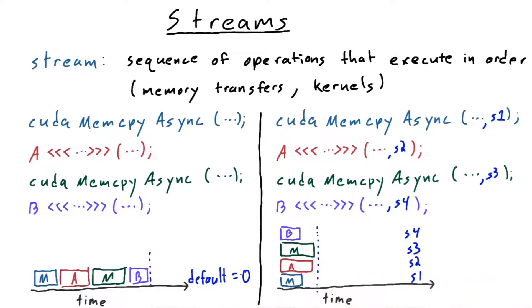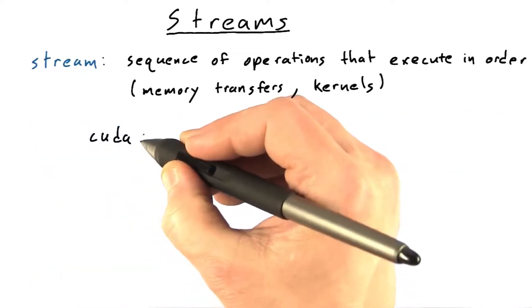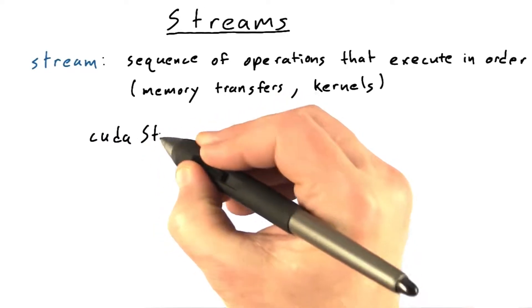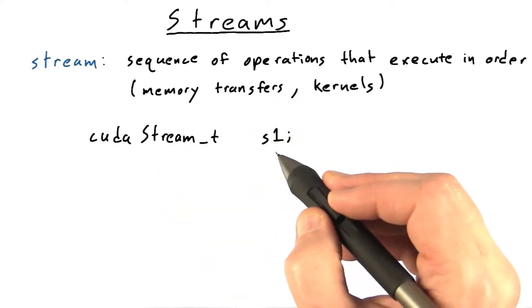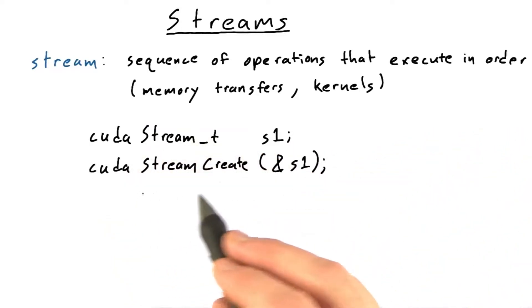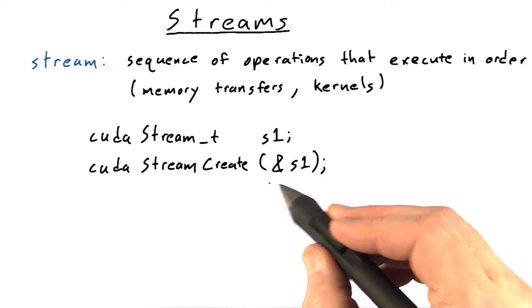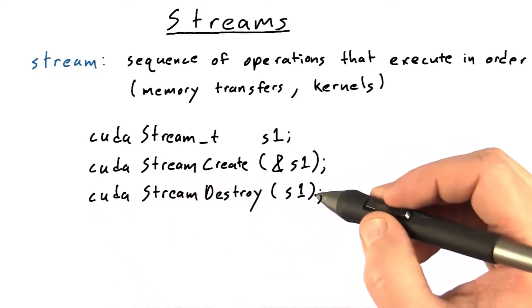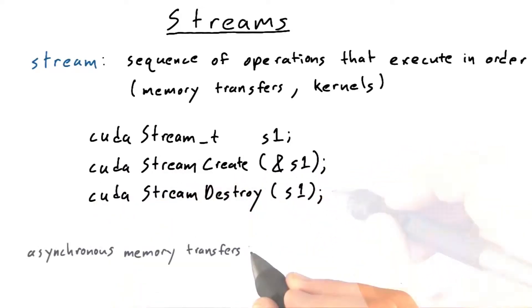A couple of notes. A CUDA stream object is of type CUDA stream_t. For example, here we declare a stream called S1. You create streams using the CUDA stream create call, passing in a pointer to the stream you want to create. And you destroy them by calling CUDA stream destroy.